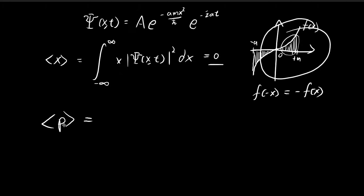For the expected value of momentum, this is just equal to the time derivative of the expected value of x. So if you're differentiating zero, you're just going to get zero. This is the expected value of momentum.